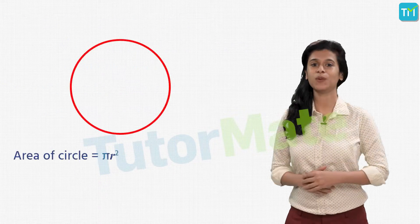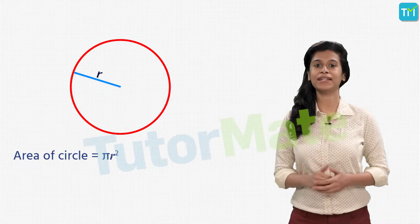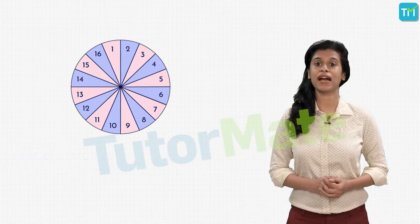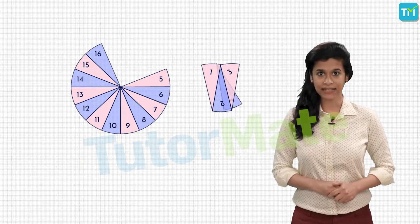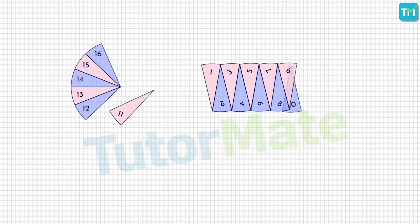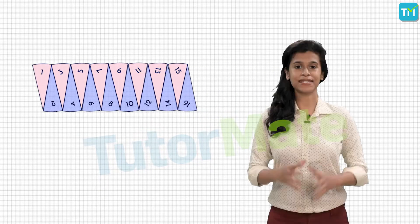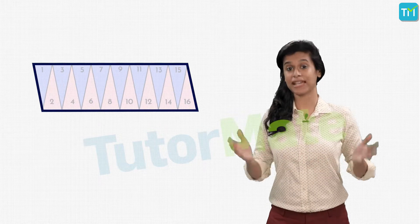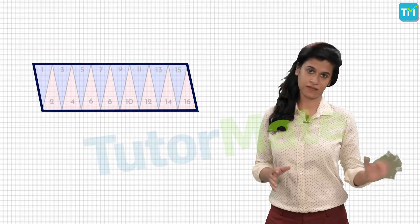Say we have a circle with radius r and we divide it into 16 sectors by cutting it along its diameters. Now we'll take these sectors and arrange them by placing them next to each other so that we get a rectangle. Since this rectangle is formed by using the pieces of the circle itself, its area will be equal to the area of the circle.